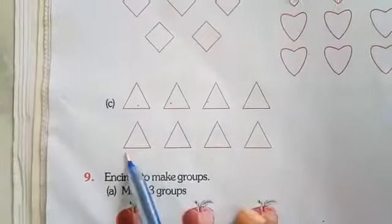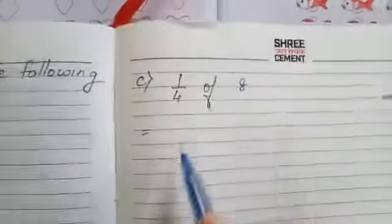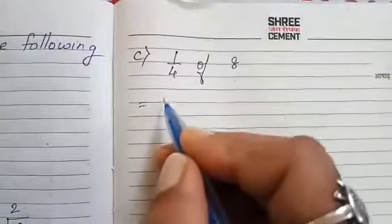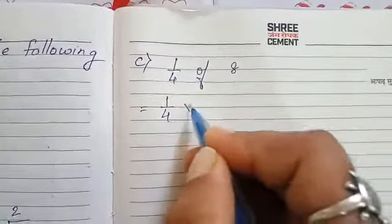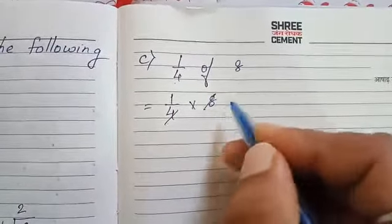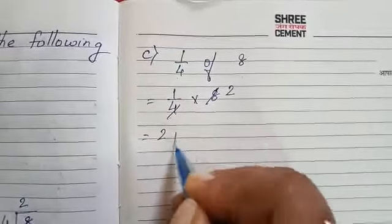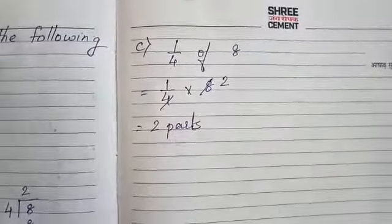1, 2, 3, 4, 5, 6, 7, 8 — so 8 triangles are there. Now in 8 triangles, the one-fourth part is 1 by 4 of 8. We write 1 by 4 multiplied by 8. In the 2 times table, 2 fours are 8, so how many parts will be there? 2 parts.